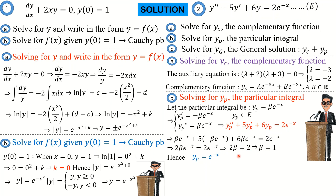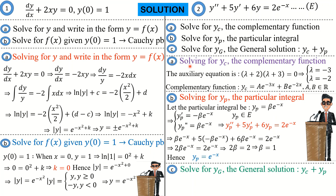Since beta equals 1, our particular integral yp equals e raised to the power negative x. For the last part, we solve for the general solution by summing the complementary function and the particular integral together. The general solution yg equals A e to the negative 3x plus B e to the negative 2x plus e to the negative x, where A and B are real constants.